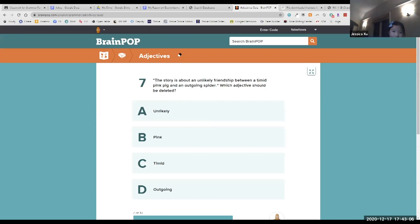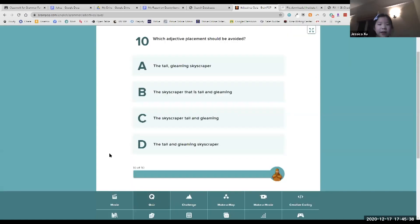Yeah, if anything you can say a timid pink pig and an outgoing black spider. But that's unnecessary because all pigs are pink and all spiders are black for the most part. I think C.